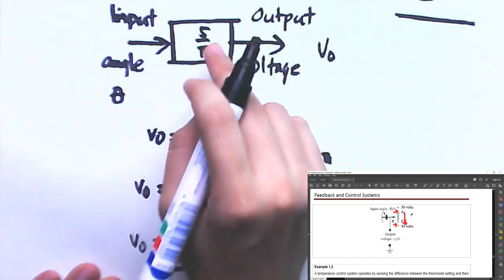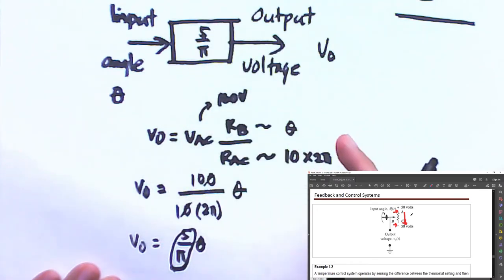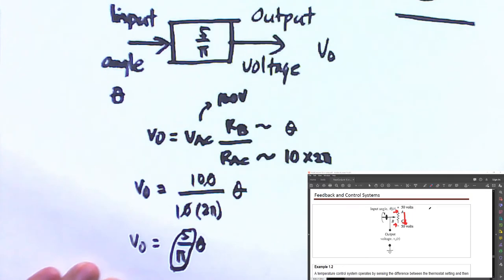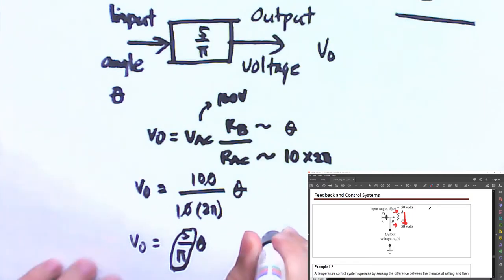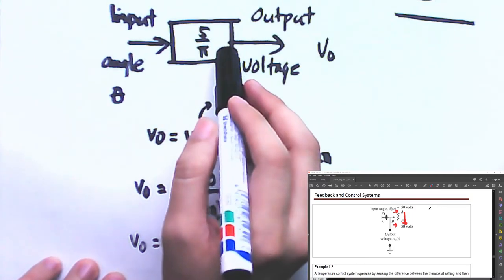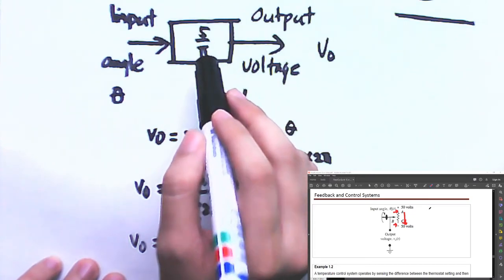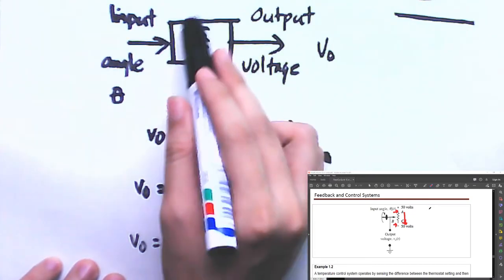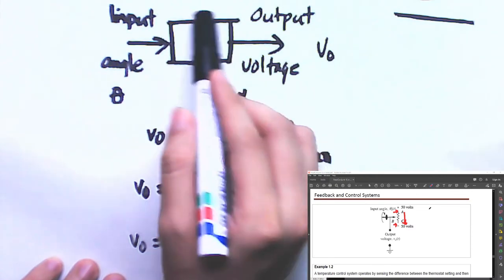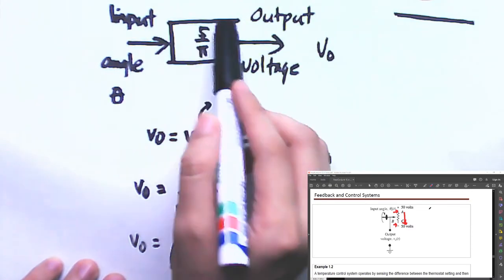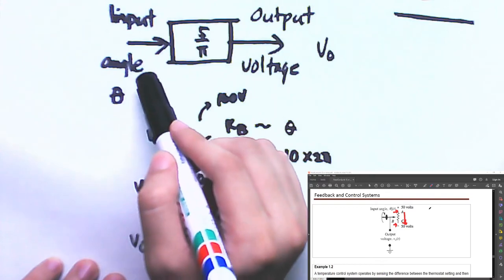The gain we are looking for is 5/π. So that's how we work on number 1. Take note: when you have a block diagram with a pure gain, whatever mathematical expression is inside the block is multiplied by the input to give the output.